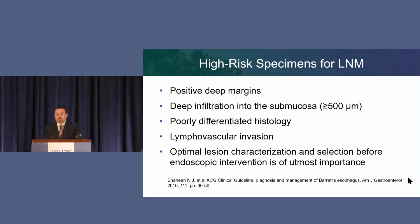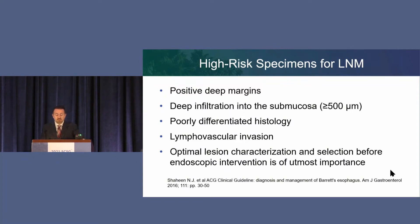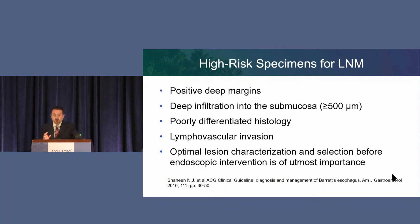A high-risk specimen for lymph node metastases is one with positive deep margins or indeterminate margins, deep submucosal invasion more than 500 microns, poorly differentiated pathology, or lymphovascular invasion present in the specimen — in which case the assumption has to be that the lymph nodes are involved. And all of this really goes back to the first talk: identifying the margins of the lesion, how big it is, and whether it looks invasive.